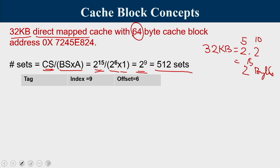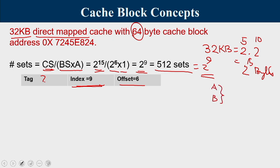The physical address is divided into tag, index, and offset. With 512 sets = 2^9, we need 9 index bits. Block size is 64 bytes, so the last 6 bits are the offset. The remaining most significant bits form the tag. If two addresses belong to the same block, they differ only in the last 6 bits — the offset bits.